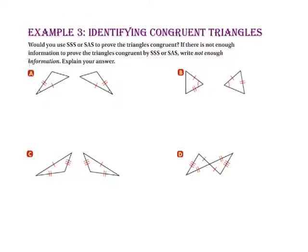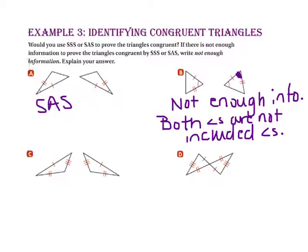In example three, we will identify congruent triangles. Would you use side-side-side or side-angle-side to prove the triangles congruent? If there is not enough information, write 'not enough information.' In part A, since we have two sides and an included angle congruent to two sides and an included angle of another triangle, we have side-angle-side congruence. In part B, we have two sides and an included angle on one triangle, but two sides and a non-included angle on the other, so we do not have enough information.